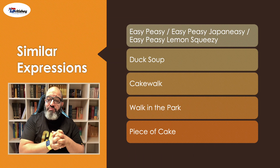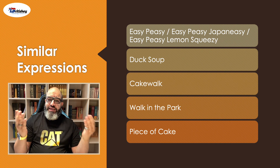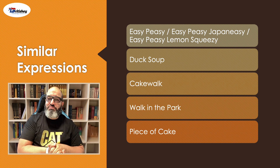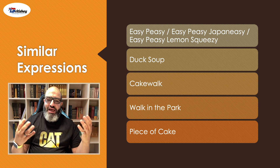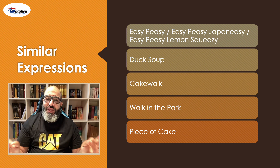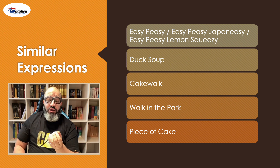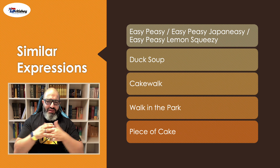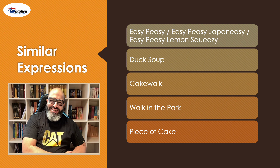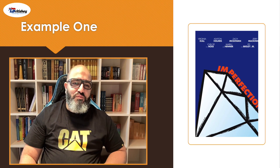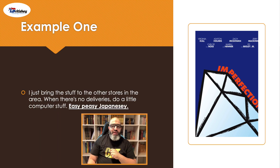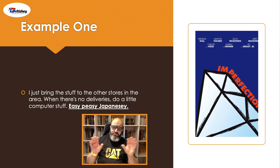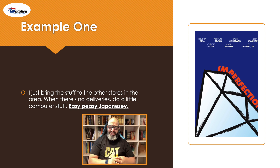We have five similar expressions: "easy peasy" (some people say "easy peasy Japanesey" or "easy peasy lemon squeezy"), "duck soup," "cakewalk," "walk in the park," and "piece of cake." Let's see these in films. From the movie Imperfections: "I just bring the stuff to the other stores in the area when there's no deliveries, do a little computer stuff — easy peasy Japanesey."